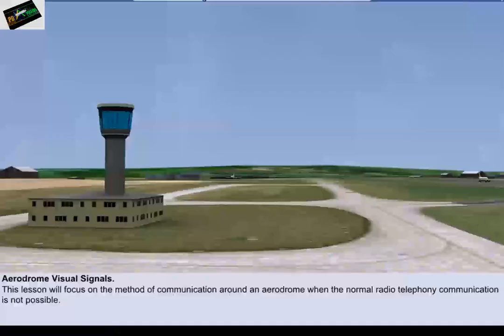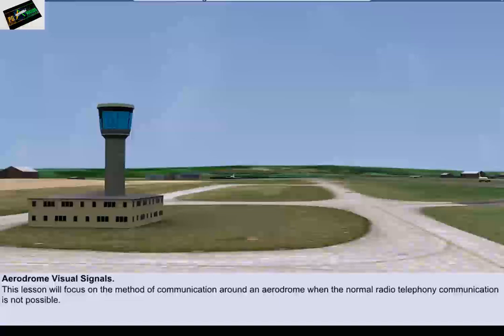In this lesson, we will examine the methods of communicating vital information around an aerodrome when communication by radio telephony is not possible, either because the aerodrome communication system is unserviceable or the aircraft communication system is unserviceable.